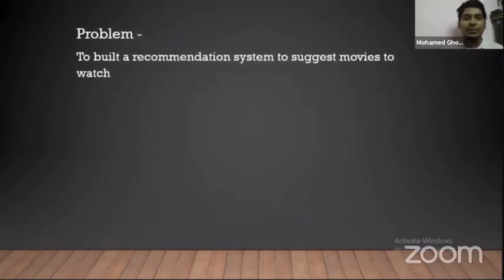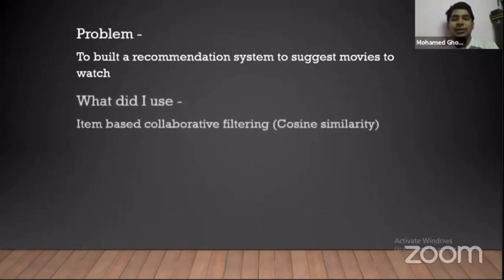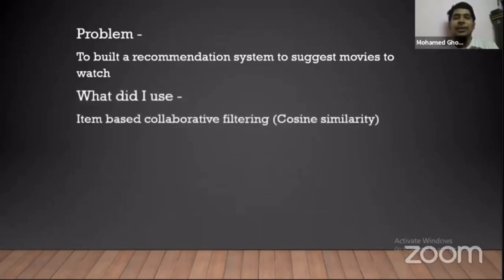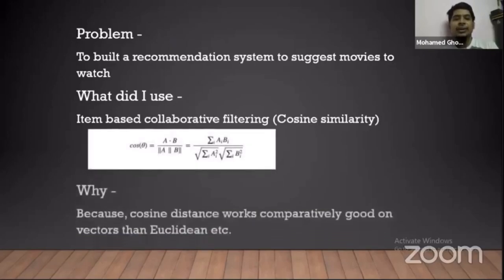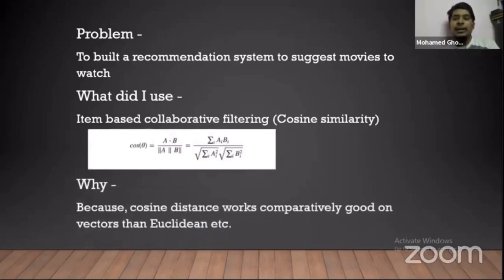My problem was to build a recommendation system to suggest movies to users. There is user-based filtering and item-based filtering — I used item-based filtering. I used cosine similarity because it works comparatively better than other algorithms like Euclidean distance.